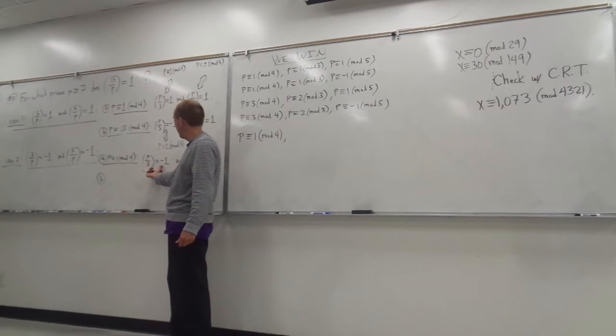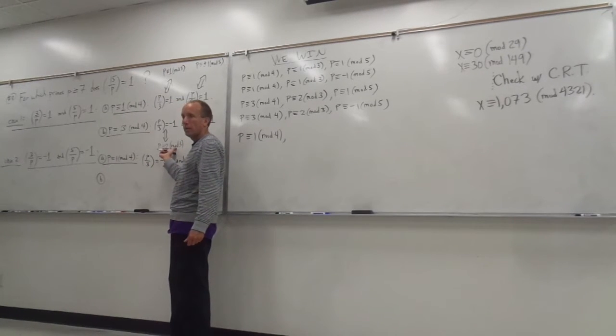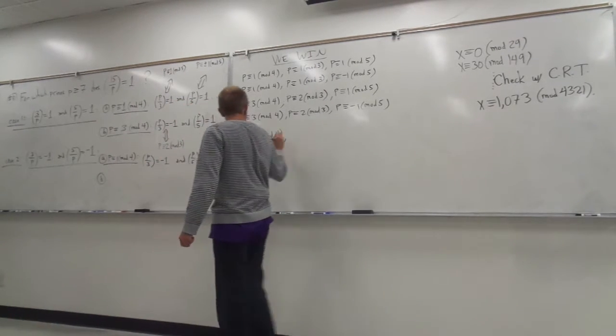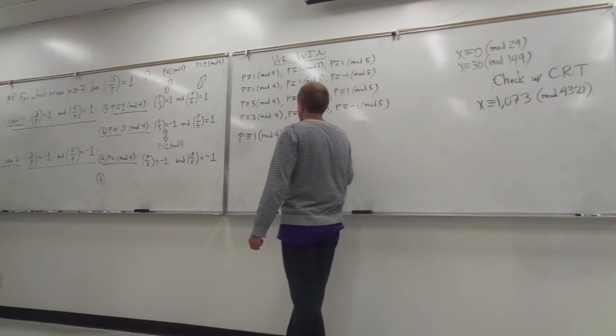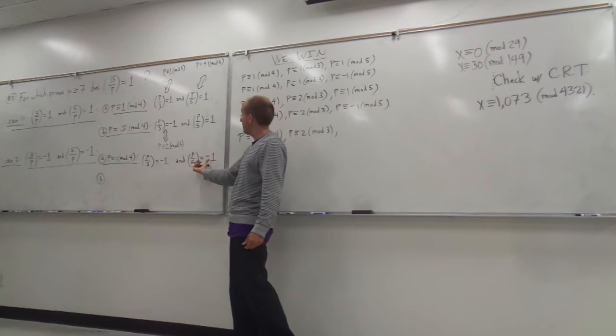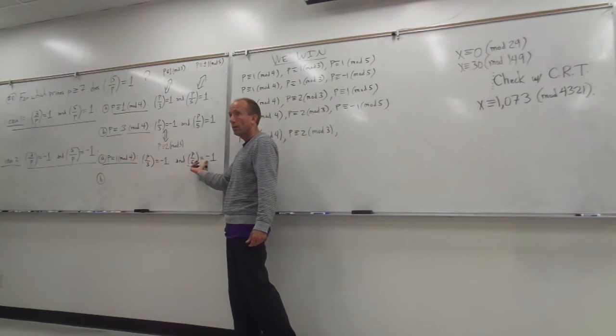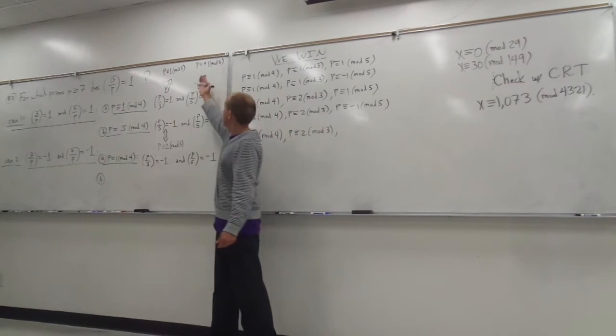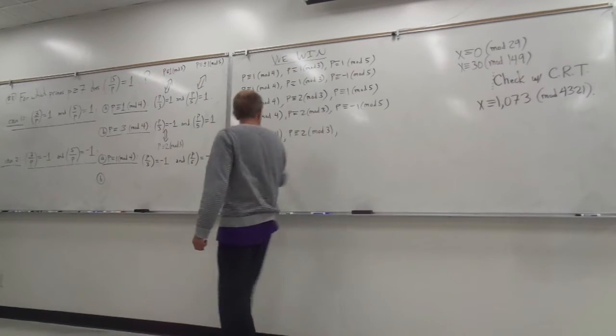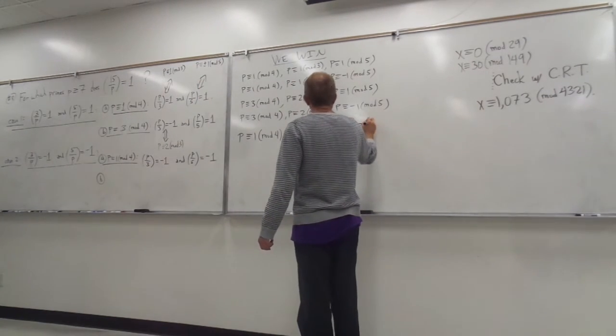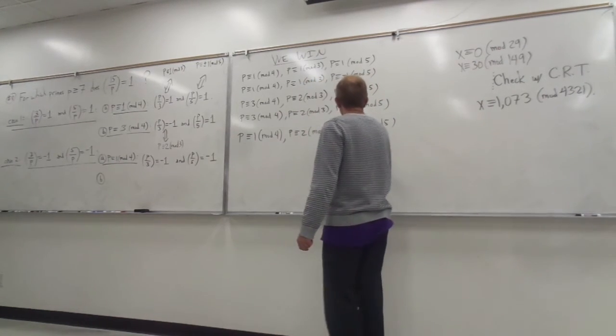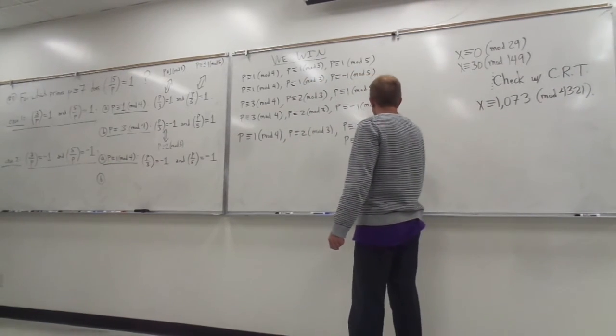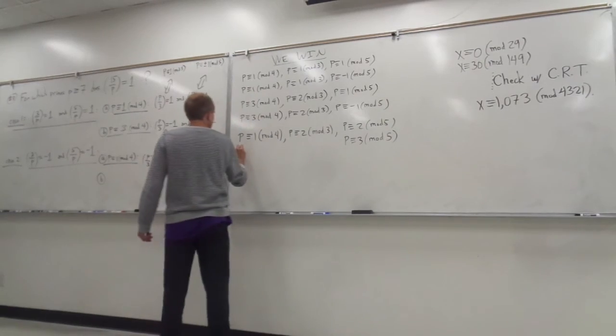When does this happen? Right here, yeah. Now, p is congruent to 2 mod 3. And when does this happen? Well, this happens when this doesn't happen, right? Namely, p is congruent to 2 mod 5, or 3 mod 5. So I'm going to do both of those with the same conditions.